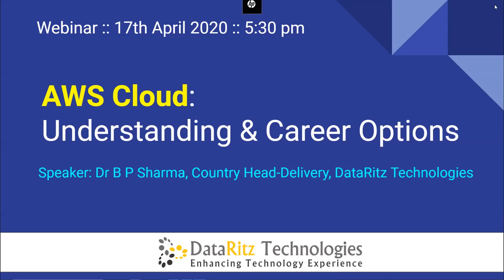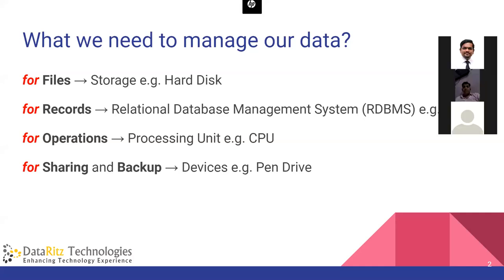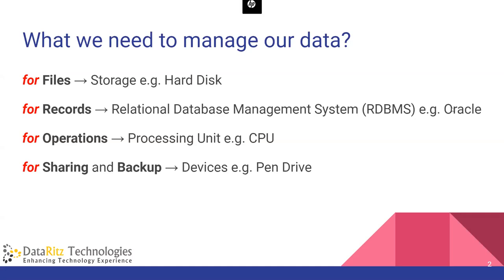So let's go back to the history. If we take an example — today we have a load of data and we need to manage it. To store your files you need storage, generally called a hard disk. To manage your records you need RDBMS systems like Oracle. For processing we need CPUs. And for sharing, we need devices like pen drives.